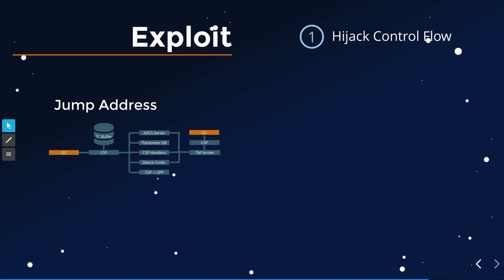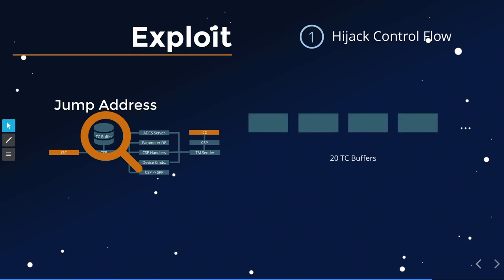What jump address do we write into the PC? There's no jump-ESP equivalent in AVR32. Instead, there's a telecommand buffer holding up to 20 received-but-unprocessed telecommands. Since all addresses are static — there's no MMU and no ASLR — we can take the static address of the first buffer entry. That's pretty helpful.